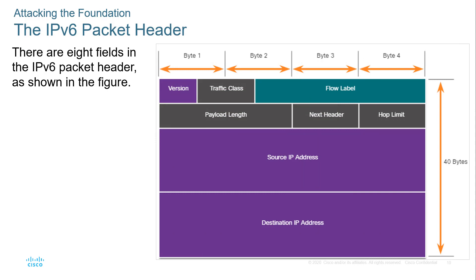Now that we've looked at the IPv4 header, let's look at the IPv6 header. The IPv6 header is much more simplified — it has version, traffic class, flow labels, payload length, next header, hop limit, and source and destination addresses. You'll notice it's double the size but less complex. That's because IPv6 addresses are 128 bits, so source and destination each take up 128 bits, which accounts for the majority of the space.